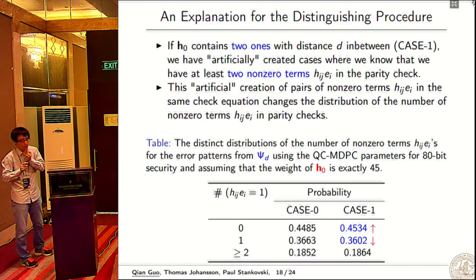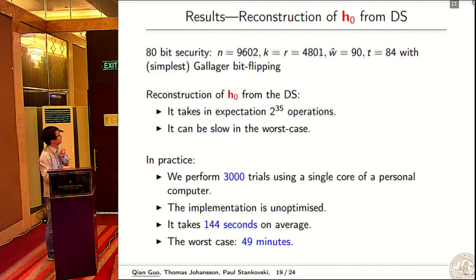Case one is where h0 contains two ones at distance d, and case zero is where it doesn't appear. In case one, we artificially injected pairs of ones that will make - we can see the distance distribution. For multiplicity equal to or greater than 2, the probability is almost the same, but this probability is higher and this is lower. In case one, we move the distribution to the direction that is good for decoding, so the decoding error probability will be low.